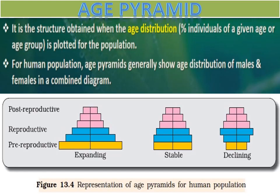In these pyramids, different age groups are shown. On the base, there is the pre-reproductive age group for all pyramids. In the middle is the reproductive age group, and on the top is the post-reproductive age group. The three types are: expanding type age pyramid, stable age pyramid, and declining age pyramid.